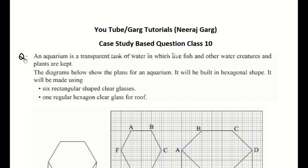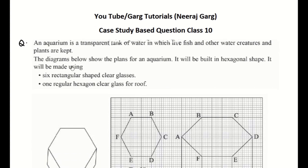Hello, children. Today we are going to ask another question, case study based. This question is from this way. An aquarium is a transparent tank of water in which live fish and other water creatures and plants are kept. You know that in aquariums there are fishes and water creatures and plants. The diagram below shows the plans of an aquarium. It will be built in hexagonal shape.